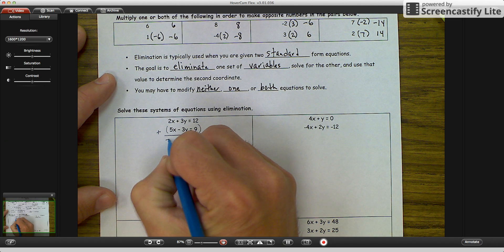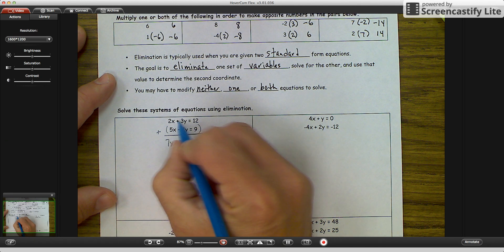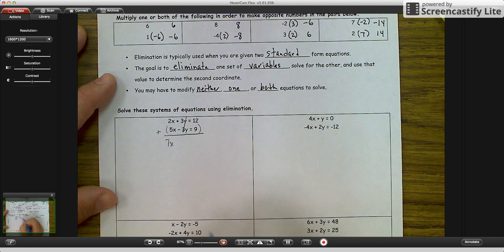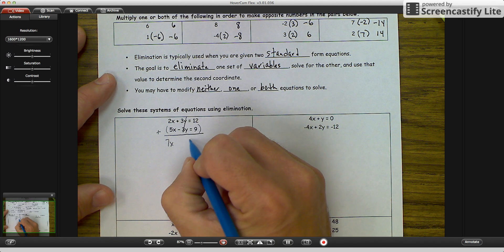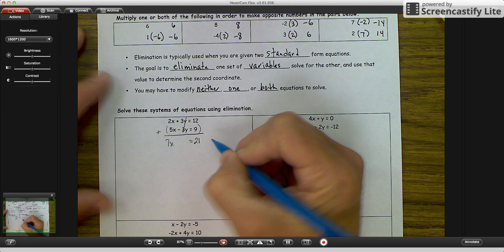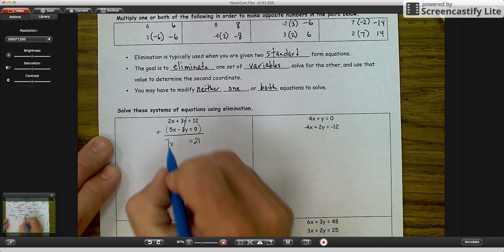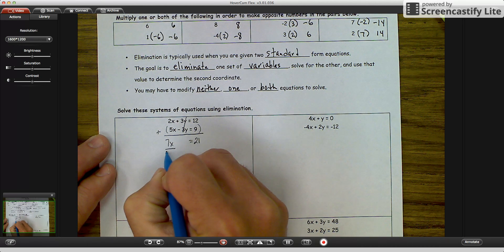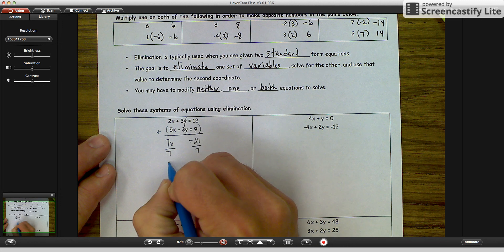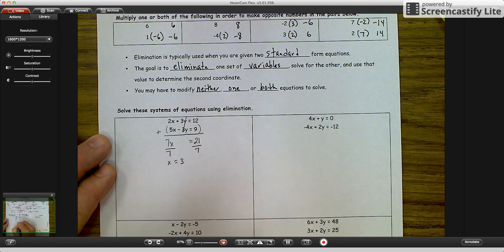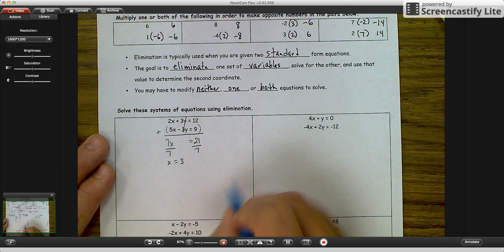So what we are going to do is we are going to add both equations together. Positive 2, positive 5 would give us a 7x. The positive 3 and negative 3, they are going to cancel out. And then you have positive 12 and positive 9 would be 21. So our new equation that we are going to solve for our x's is 7x equals 21. Divide by 7, and you get x equals 3. That is our first coordinate.